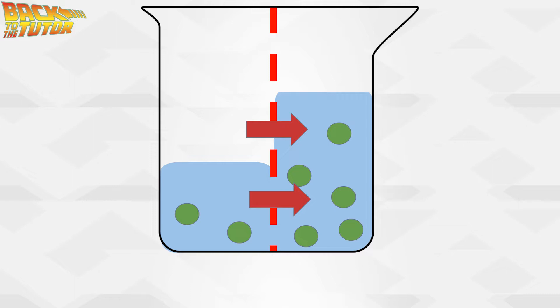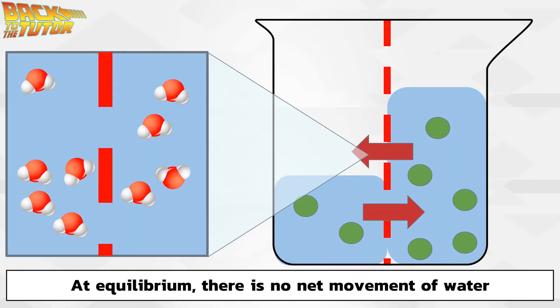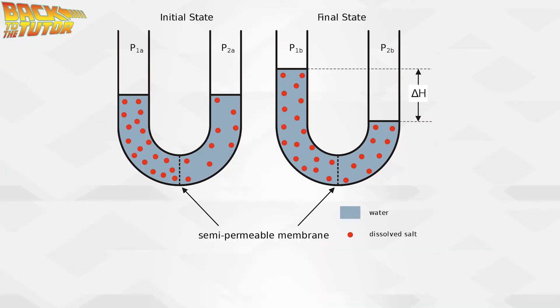We'll get to why the water moves this way in more depth later, but one important takeaway is this: generally speaking, water will move from an area of low solute concentration to an area of high solute concentration across a membrane during osmosis. This is an important idea to keep in mind, so make sure you're CONCENTRATING. At equilibrium, for every water molecule that crosses the membrane from left to right by chance, another one crosses from right to left, so there is no net change in water levels. You may also see someone try this in a device called a U-tube, which is a tube that looks like a U.